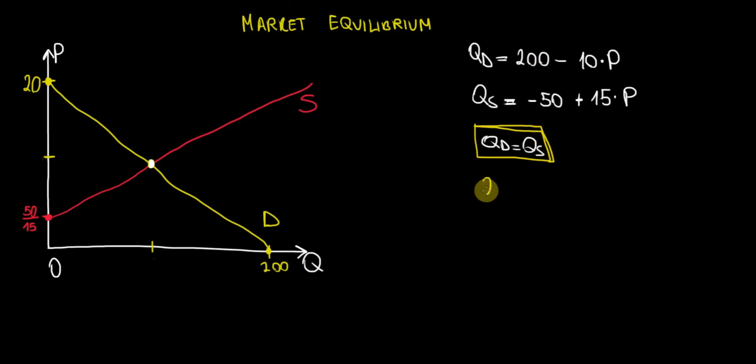So as a result of this we have 200 minus 10 times P which is the demand function equals to minus 50 plus 15 times P which is the supply function.